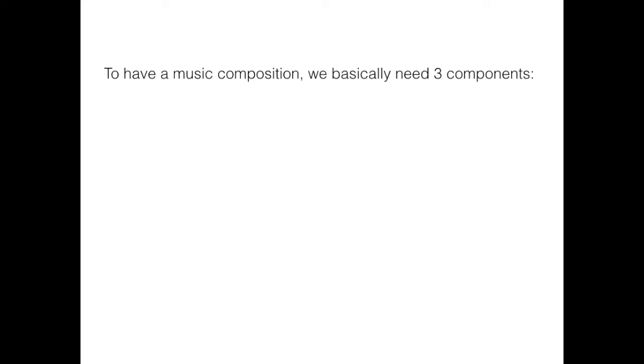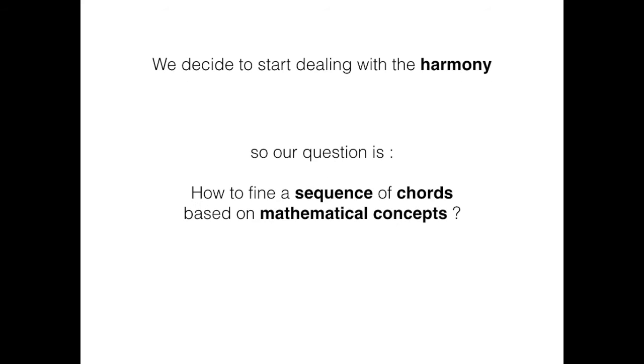Music is purely made from math. To have a music composition, we basically need three components: harmony, melody, and rhythm. We decide to start dealing with the harmony, so our question is, how to find a sequence of chords based on mathematical concepts?